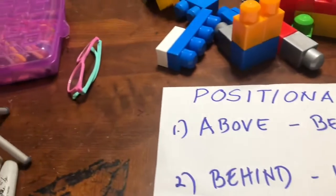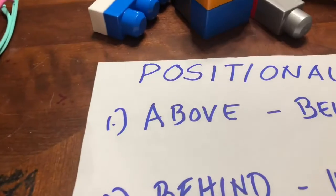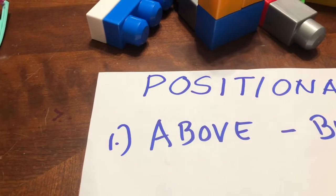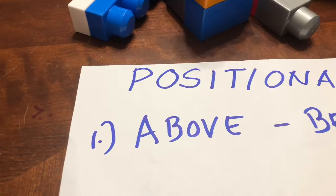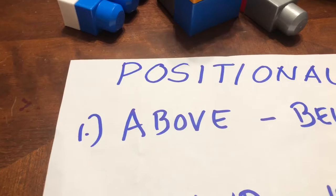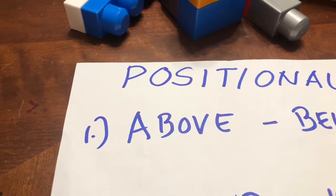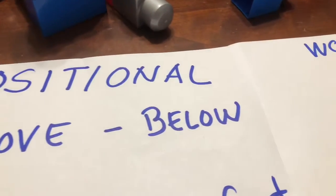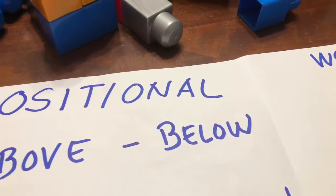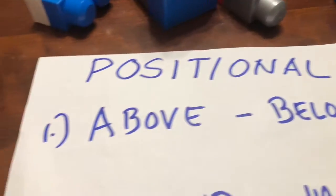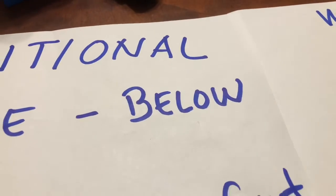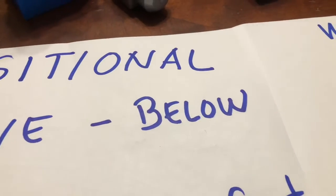So the first word that you need to learn is, what is this? Above. Above. What is the opposite of above? The other side of above — this one here. Below. Below.